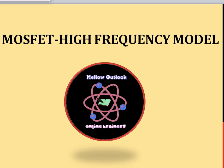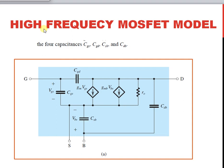Welcome to the tutorial on MOSFET high frequency model. The high frequency MOSFET model includes four capacitances: CGS, CGD, CSB, and CDB.